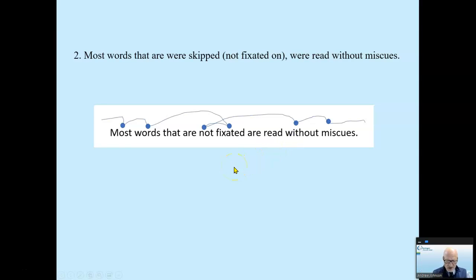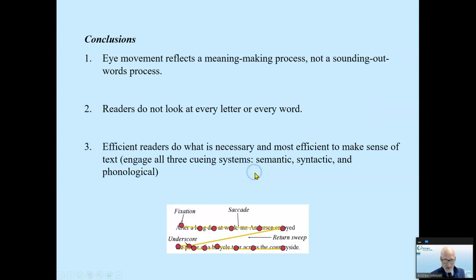Most words that were skipped in his study, that were not fixated on, were read without miscues. Again, remember, we don't actually perceive visual stimuli unless we fixate on it. So even though they were skipped, most words that were skipped were read without miscues. So what can we take from this?